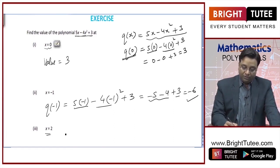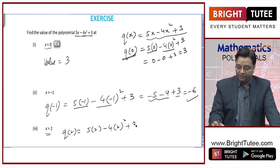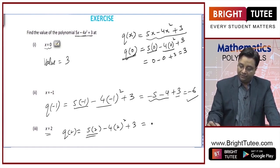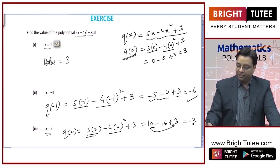Now x equal to 2. q of 2 is 5 into 2 minus 4 into 2 squared plus 3. This will give you 10. This is 4 into 4, which is 16, so negative 16 plus 3. 13 minus 16 is minus 3. So this is the value.